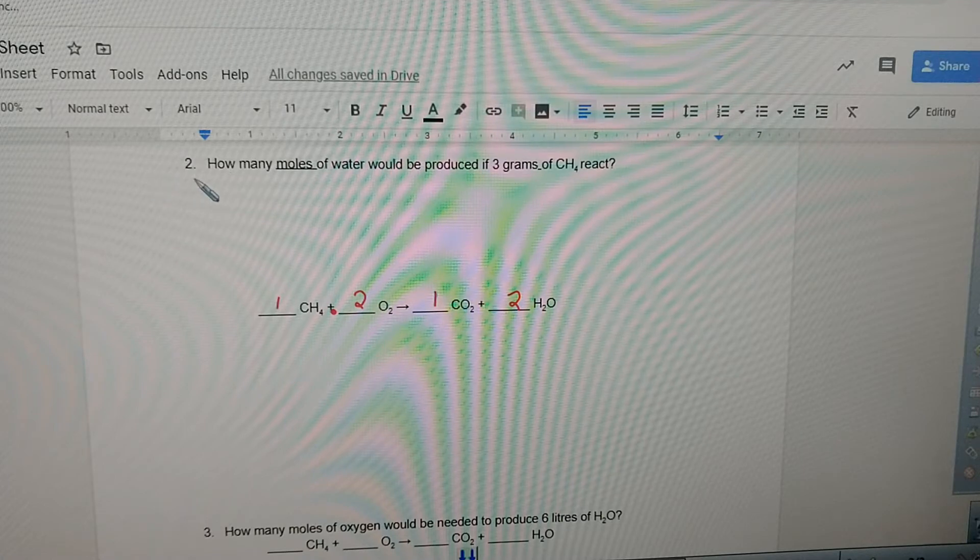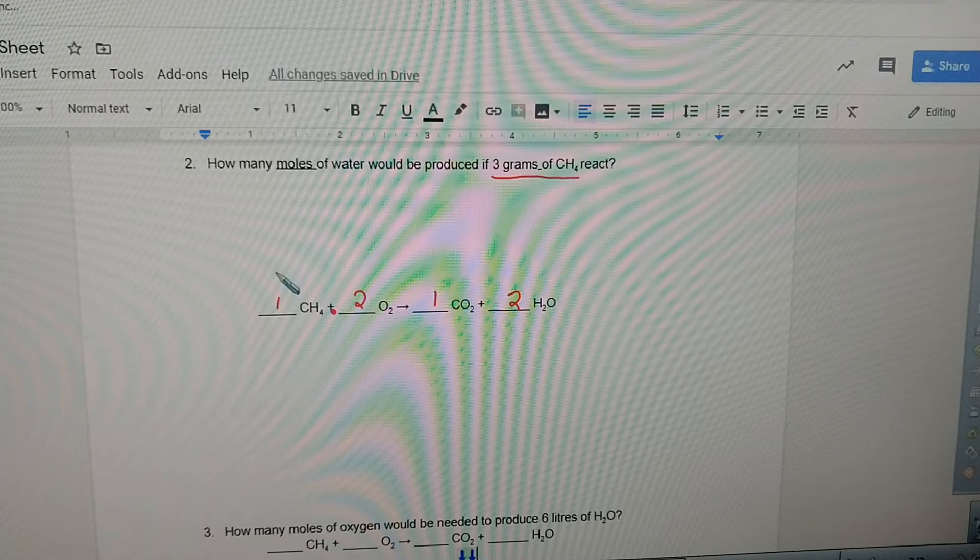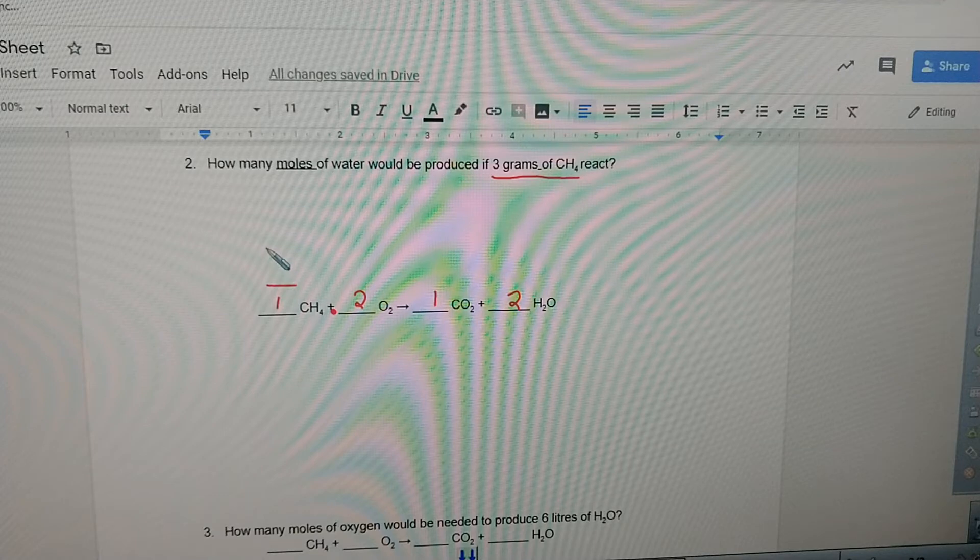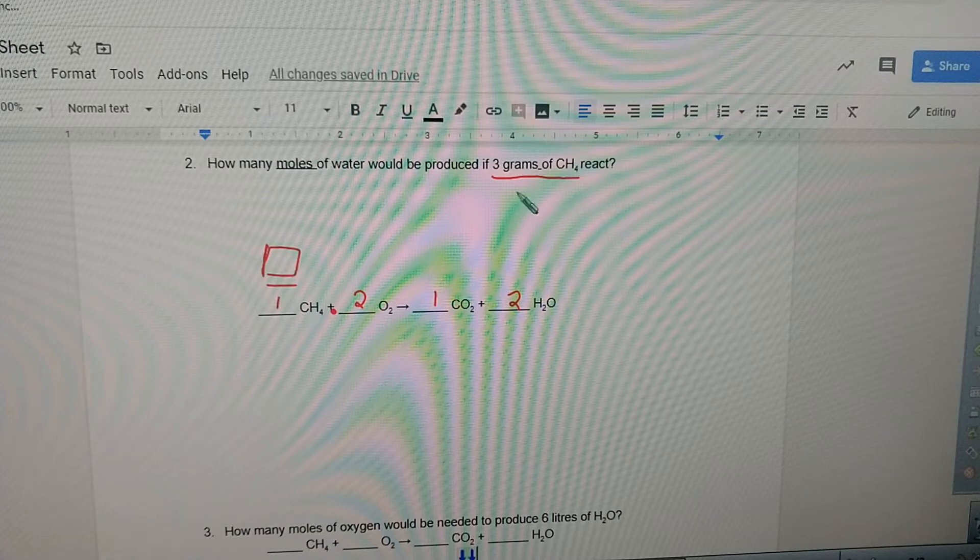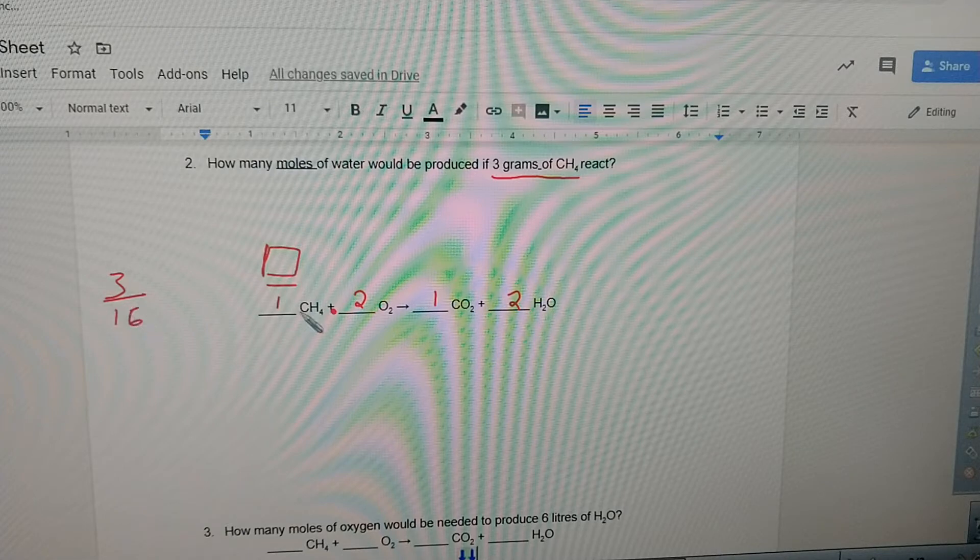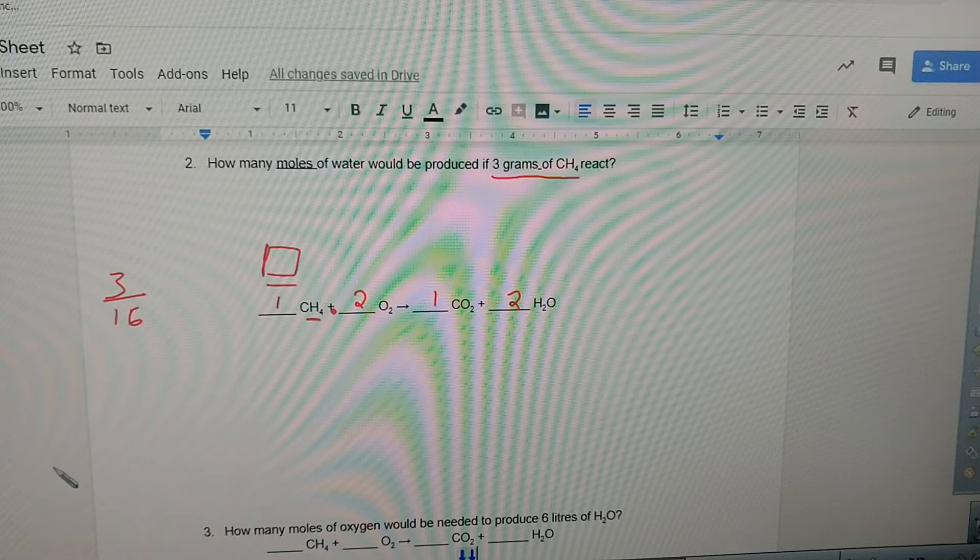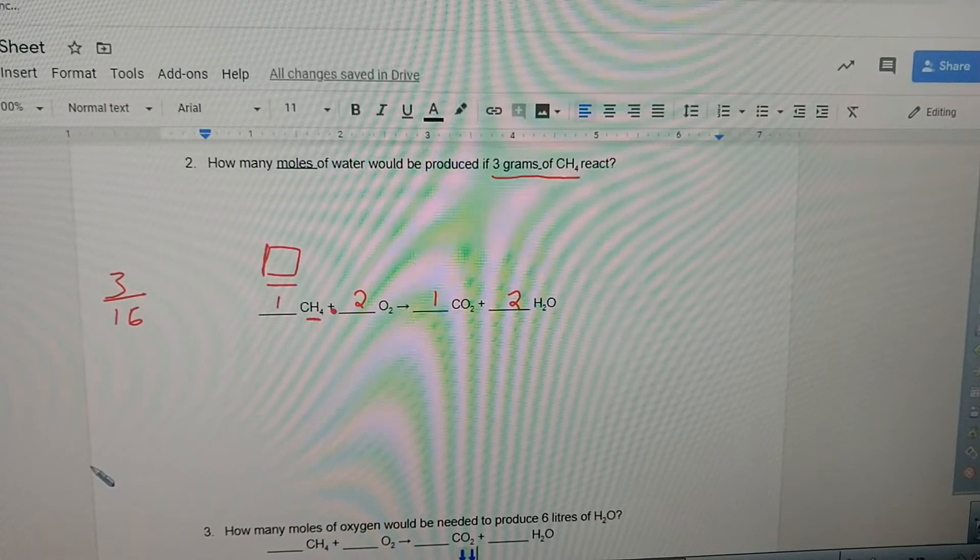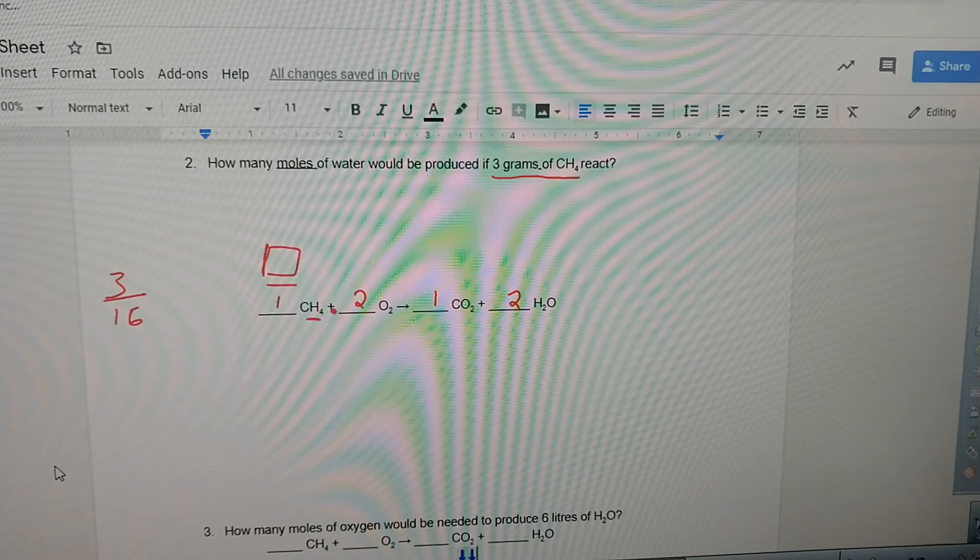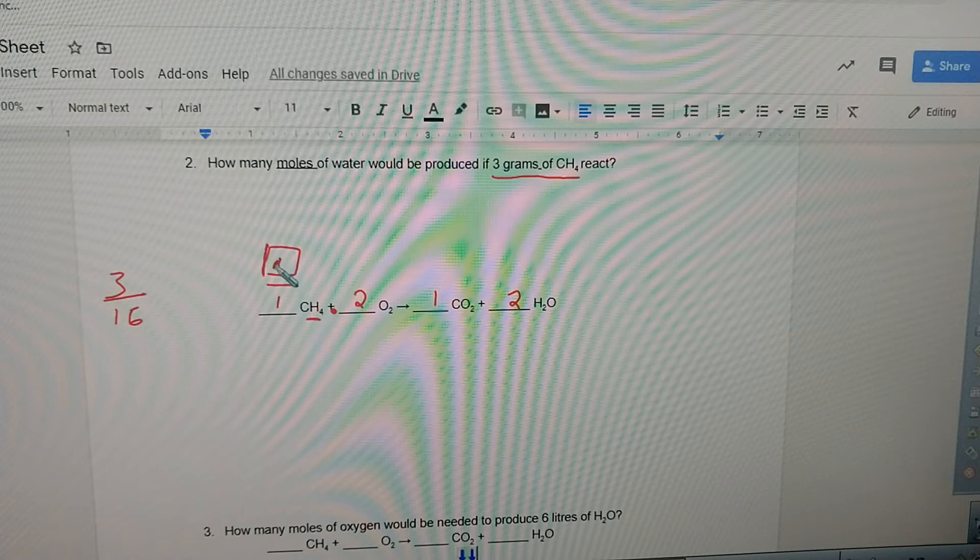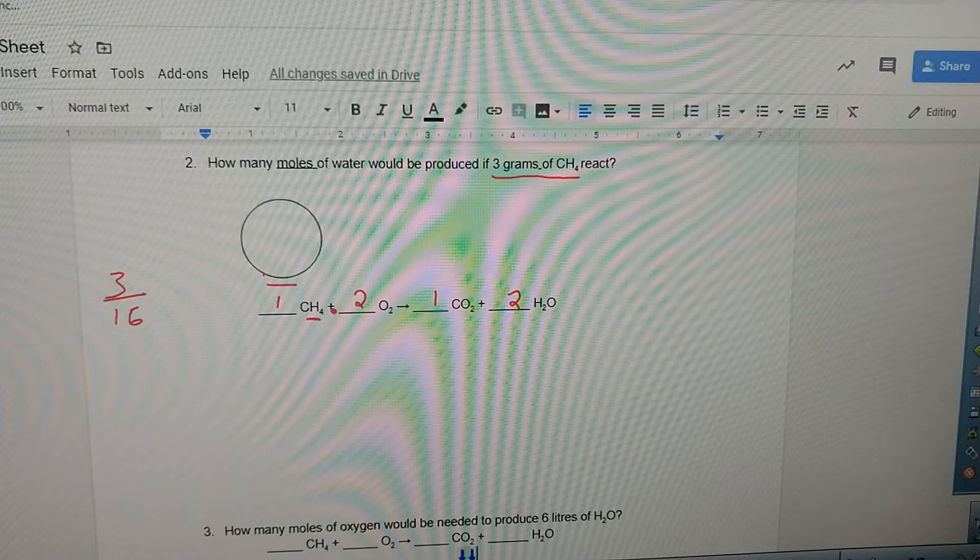Now look, number two, three grams of methane react. I can't put a three here because the number that goes here in the little fraction has got to be moles. So the first thing we're going to do is three divided by 16. That 16 is the number of grams per mole for methane. Three divided by 16 equals 0.1875. I'm just gonna call that 0.19.